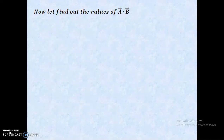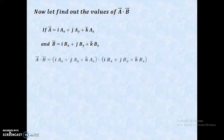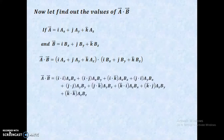Now let us find the value of A-vector dot B-vector in component form. Let A-vector equal i·Ax + j·Ay + k·Az, and similarly B-vector equal i·Bx + j·By + k·Bz. Then we find the dot product A-vector dot B-vector by multiplying these component representations, with A-vector represented symbolically dotted with B-vector represented symbolically.